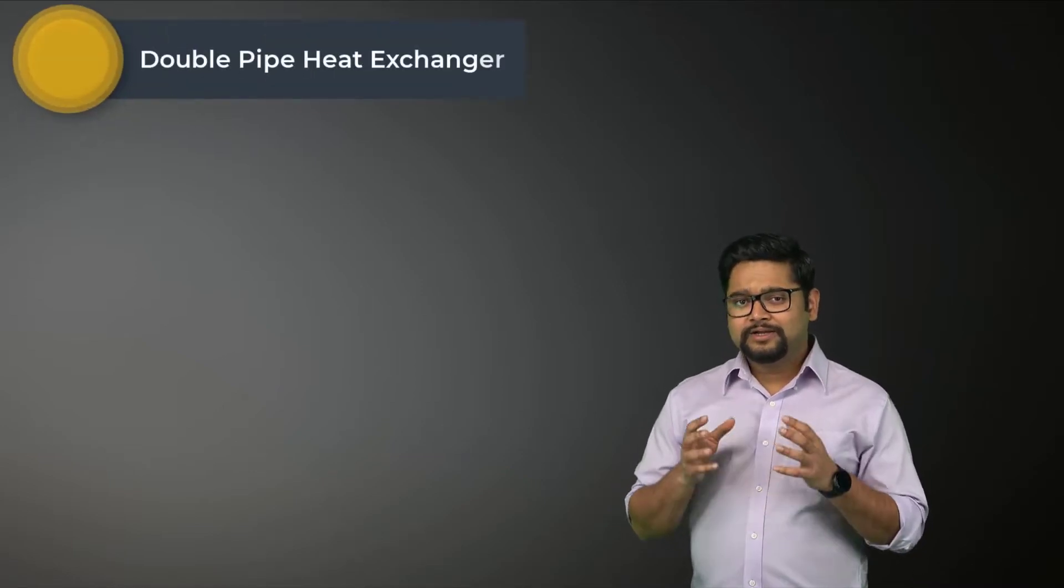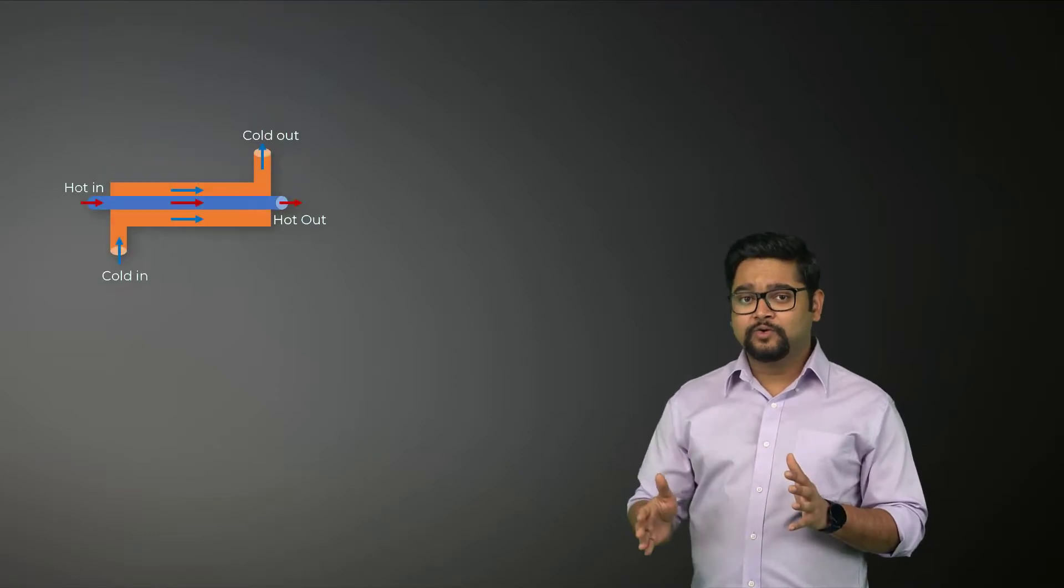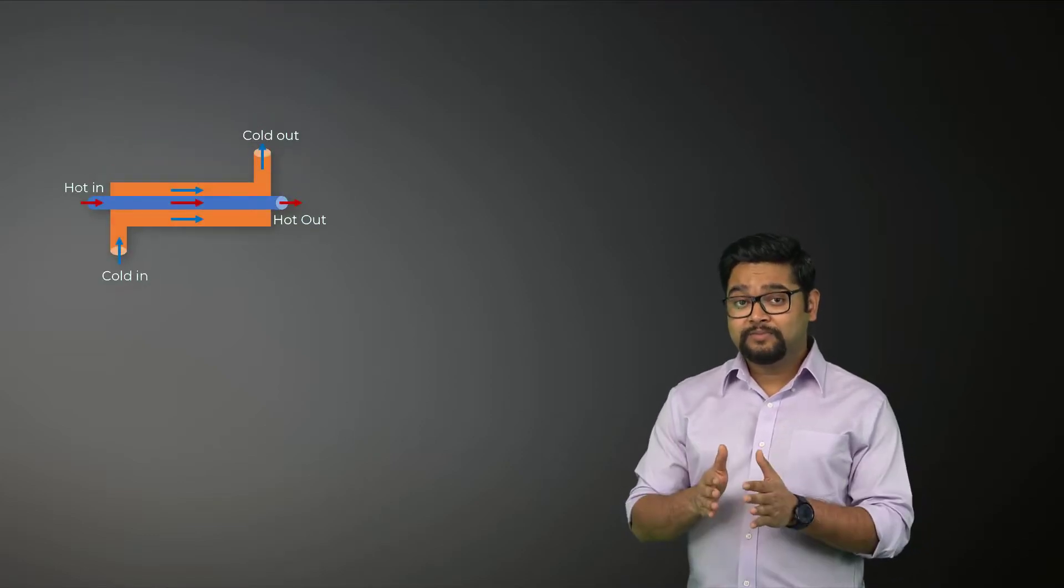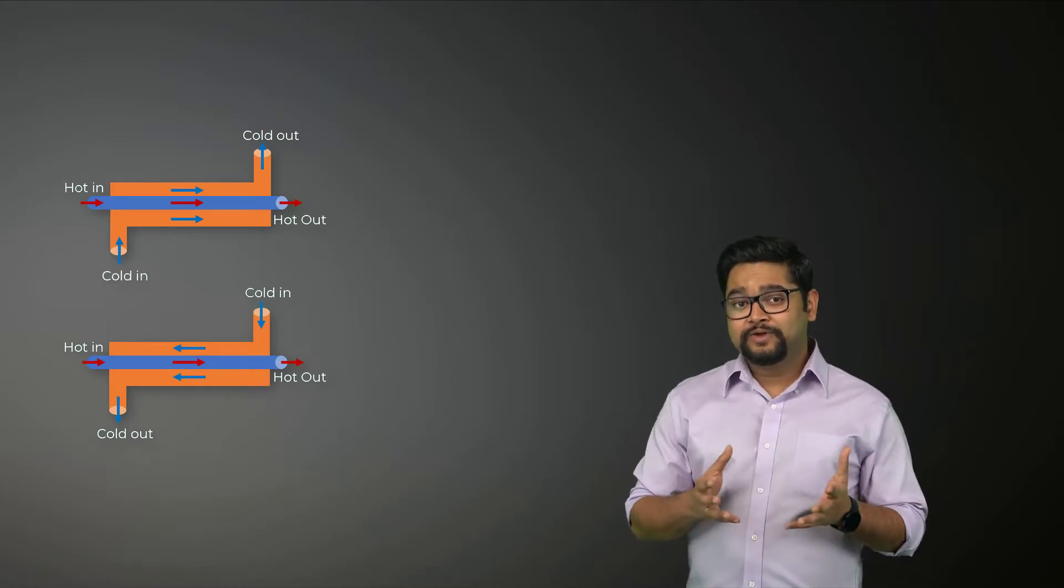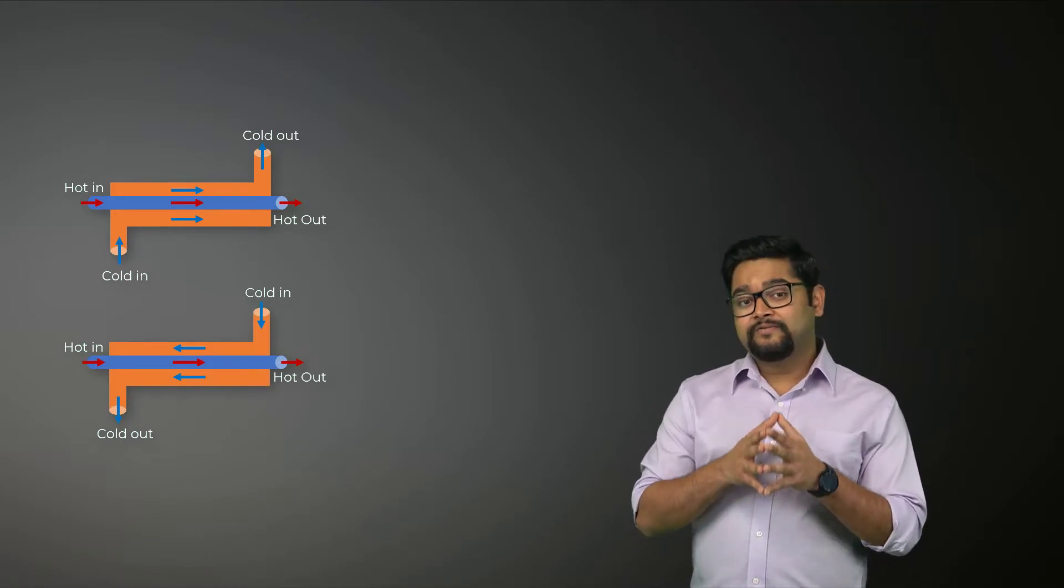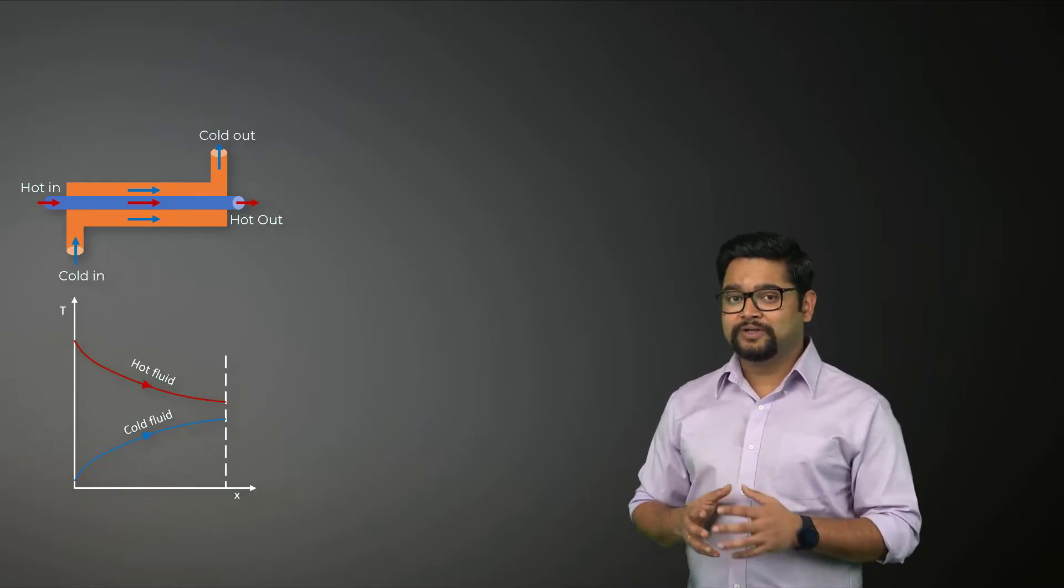The simplest heat exchanger is a double pipe heat exchanger that consists of concentric tubes in which the hot and cold fluid move in the same or opposite direction. If the fluids are moving in the same direction, then we would get a temperature distribution as shown here.